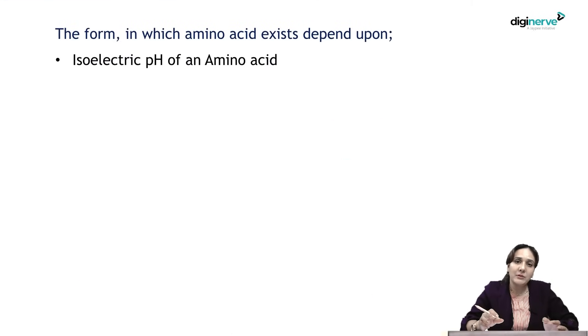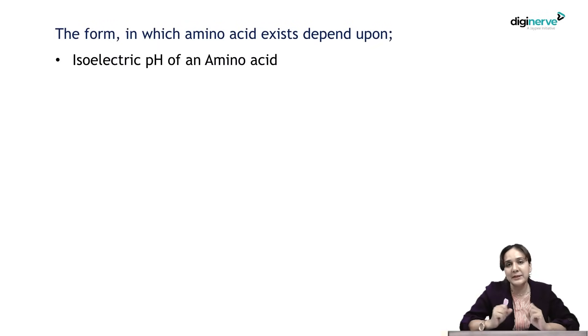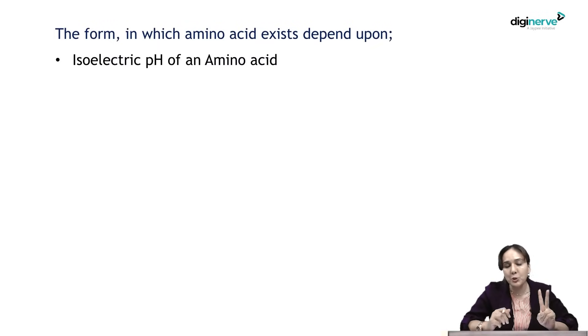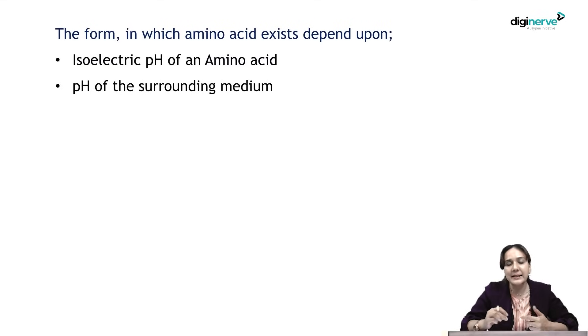In which form — cation or anion — an amino acid will exist depends on two points: first, the isoelectric pH of the amino acid itself, and second, the pH of the surrounding medium.